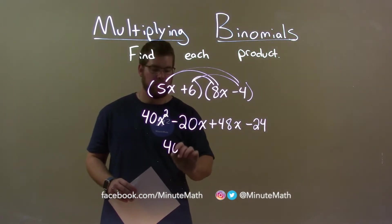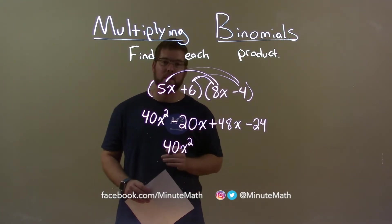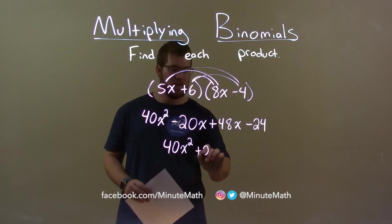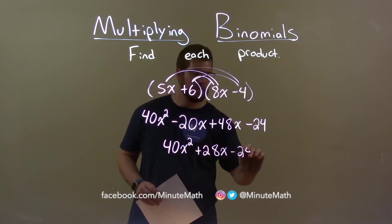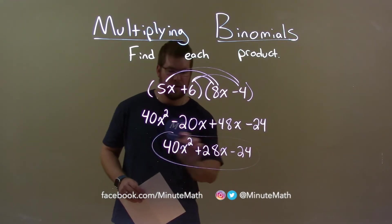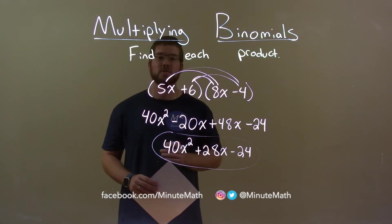Bring down the 40x squared and minus 20x plus 48x is plus 28x. Bring down the minus 24 and our final answer here is 40x squared plus 28x minus 24.